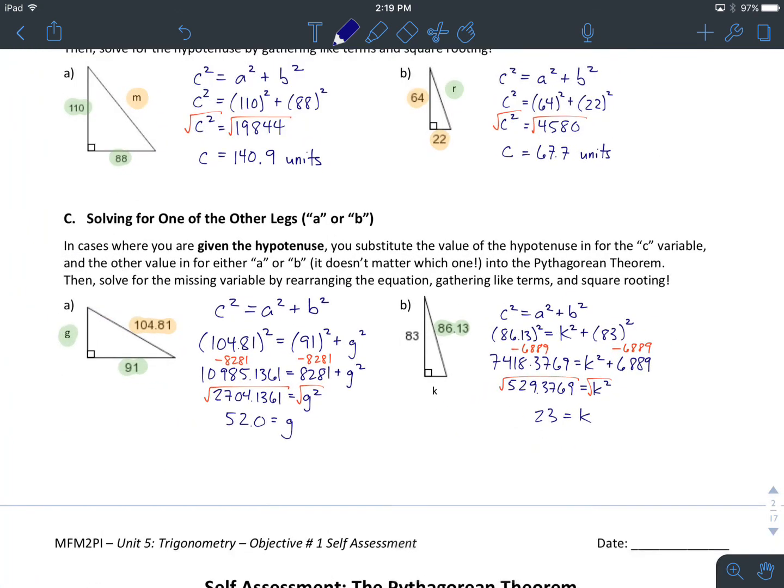So this is how you use the Pythagorean Theorem to go about finding side lengths in a right-angled triangle, either the hypotenuse, as we saw in part B, or one of the other two legs, as you saw in part C. So now is the time that you head off. Do the self-assessment. Check with your teacher. Following that, you'll do a ticket out the door, and then you are on to objective number two.